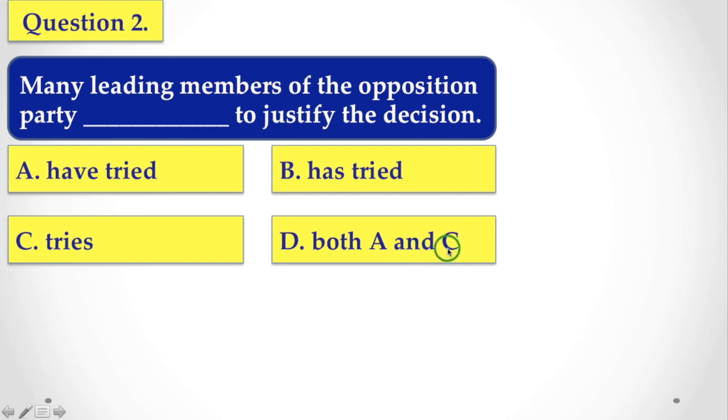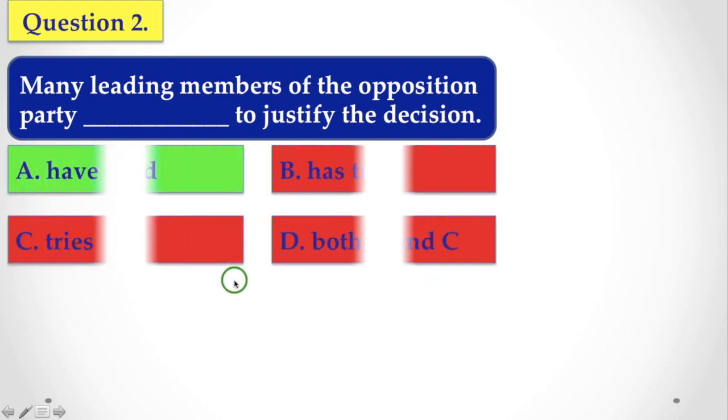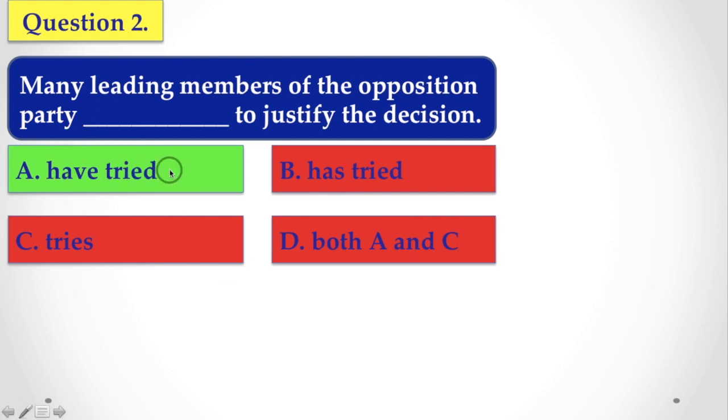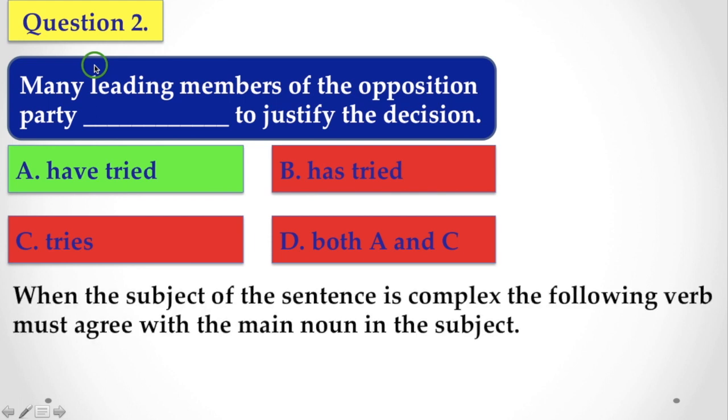So here, the correct choice is have tried. Why it is have tried? Because you may be confused that party, this is singular and after that you have to use singular verb. But, while getting these kind of sentences, you just remember one thing.